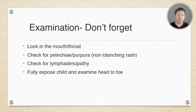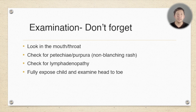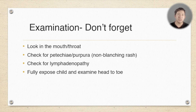When you examine the child, don't forget to look in the mouth and throat. You also need to look for petechiae and purpura — check whether any rash blanches, meaning it goes white when you press it. Any red rash should turn white when pressed; if it doesn't, that should raise suspicion for petechiae or purpura and things like meningococcal sepsis. Check for lymphadenopathy, mostly in the neck but also elsewhere. Expose the child head to toe, look at all their body to see where the rash is and what kind of rash they have, and examine all their other systems. Take a full history, do a full examination, and you won't miss things.